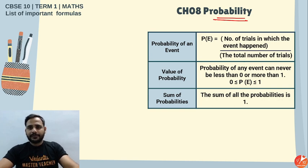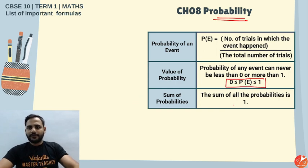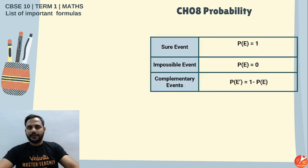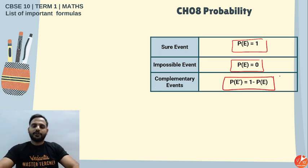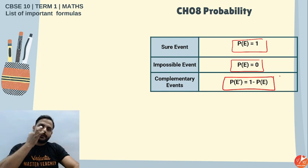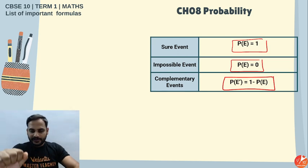Probability: number of favorable outcomes divided by total number of outcomes. Probability value is always between 0 and 1. The sum of all probabilities equals 1. A sure event has probability 1, an impossible event has probability 0, and the complementary event: P(not A) = 1 − P(A).